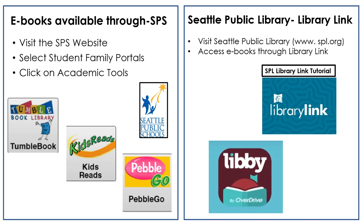If you need to review your book to find the important ideas and don't have the book at home, you can go to Seattle Public Schools — the SPS website — click on the student family portals, and select the academic tools button. There you'll find options for Tumble Books, Kids Reads, and Pebble Go, where you can search for your book. If you don't find it there, go to Seattle Public Library. They have an exciting new program for Seattle Public School students to get access to online books without a library card, through Library Link, with a tutorial to get you signed up.